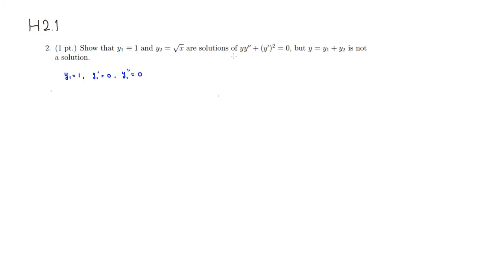Let's start with the left-hand side. The left-hand side of the differential equation is going to be y1 times y1 double prime plus y1 prime squared. Plugging everything in: y1 is 1, y1 double prime is 0, plus y1 prime is 0 squared — still 0. Everything is 0, which equals the right-hand side. This verifies that y1 is a solution of the differential equation.